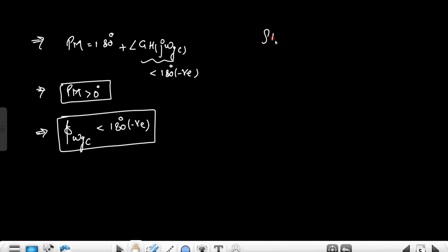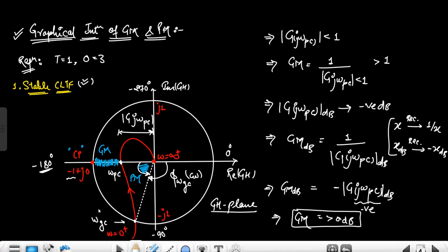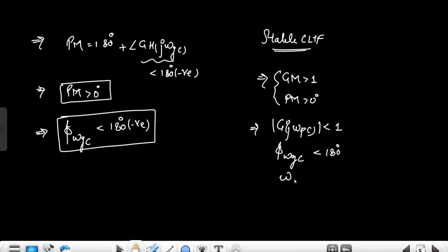So for stable CLTF, gain margin greater than 1 and phase margin greater than 0°. The magnitude at phase crossover frequency should be less than 1, and the angle of ωgc should be less than 180° in magnitude. The condition is that the gain crossover frequency should be less than the phase crossover frequency — ωgc < ωpc. When ωpc lies before the critical point and ωgc lies on the unit circle before the −180° line, all these conditions are satisfied.